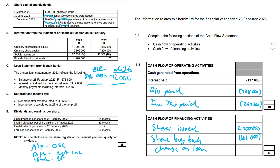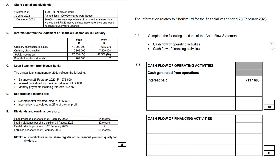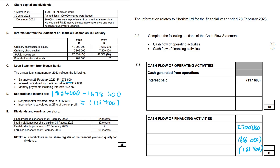For the change in loan amount, the only missing figure from a previous question is the balance at the beginning of the year, which was 1,834,000. The balance at year end was 1,678,600. That represents a decrease — an outflow — of 155,400. So adding all financing figures: 2,700,000 minus 666,000 minus 155,400 gives us 1,878,600.